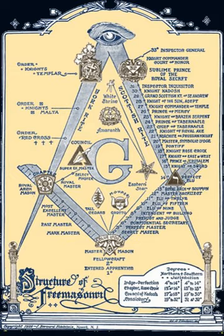The Royal Order of Scotland. The Ancient and Accepted Scottish Rite. The Masonic Knights Templar. The Red Cross of Constantine, which works five degrees.